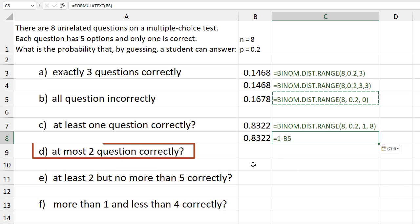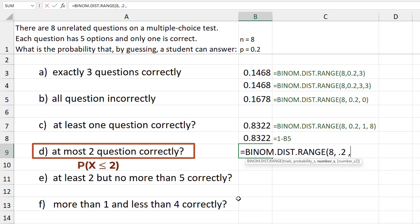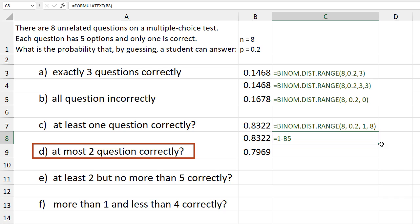For part d, at most two questions correctly means maximum 2. So we go from 0 to 2 successes. I'll drag down the formula text again.